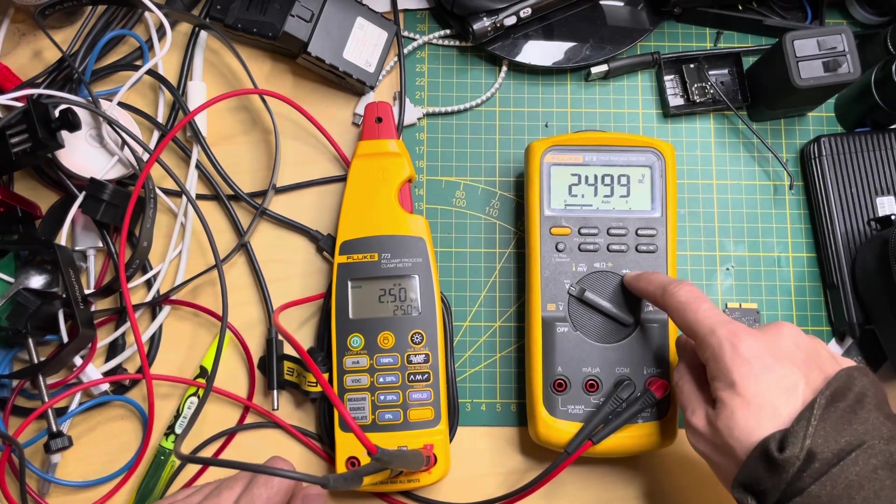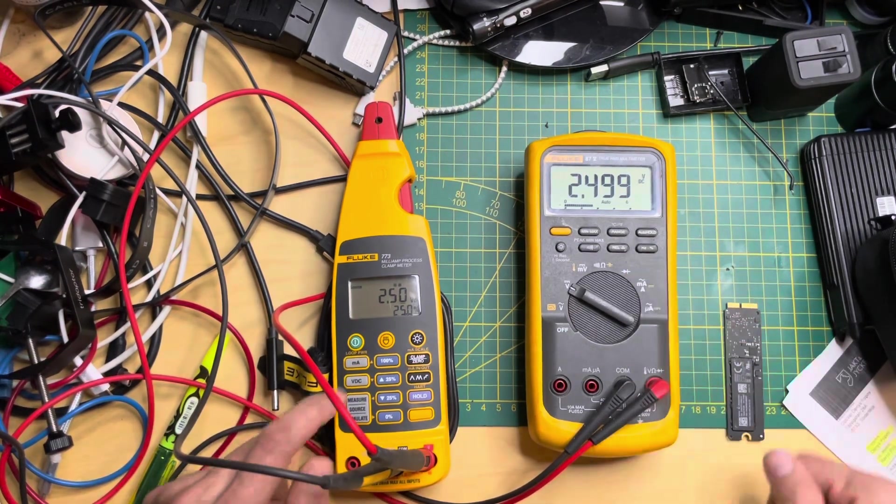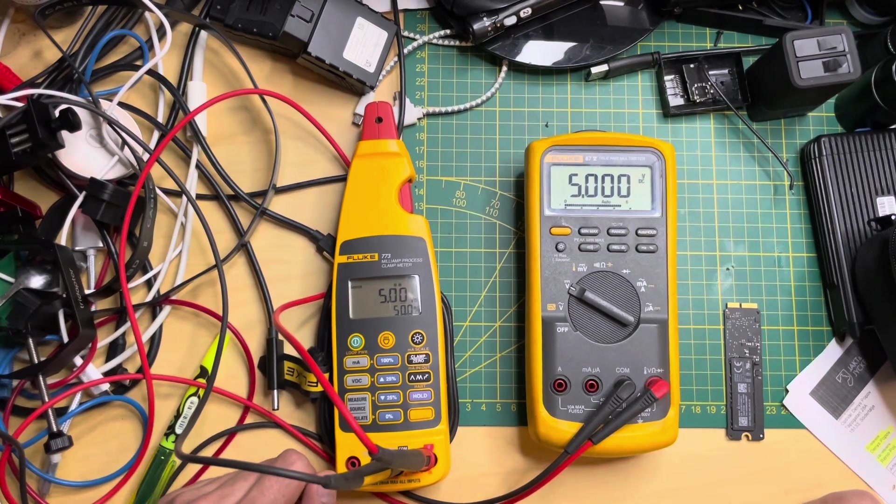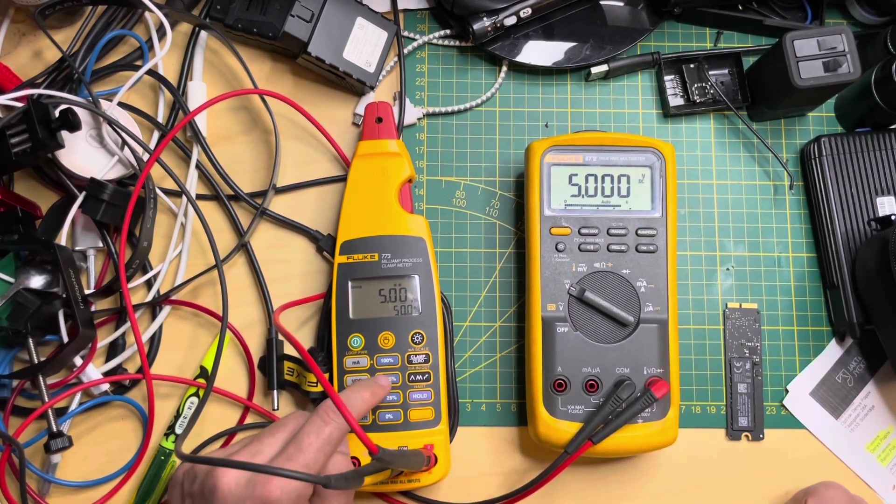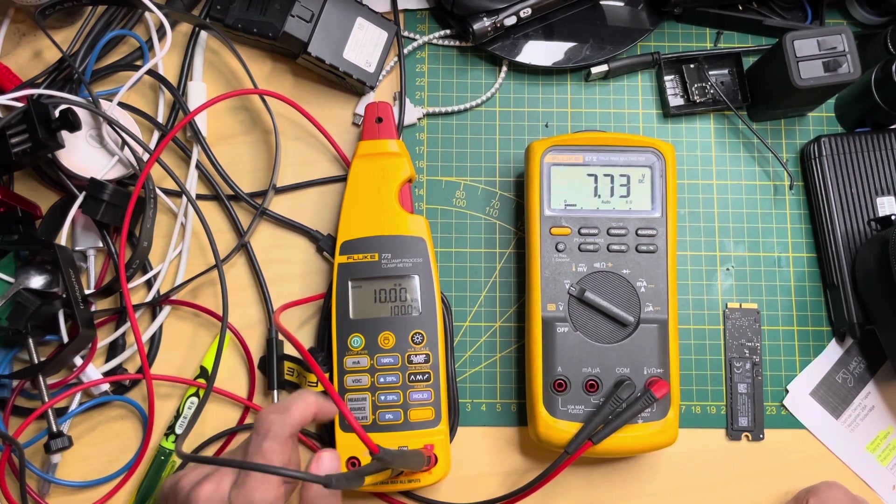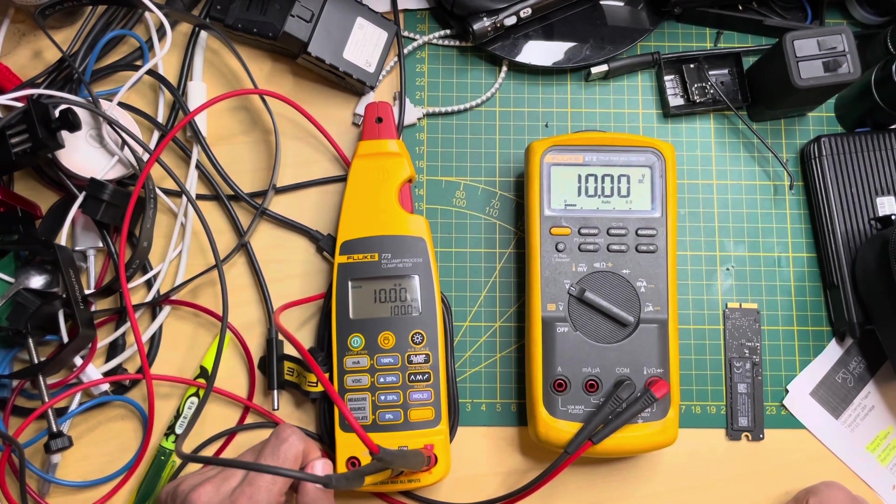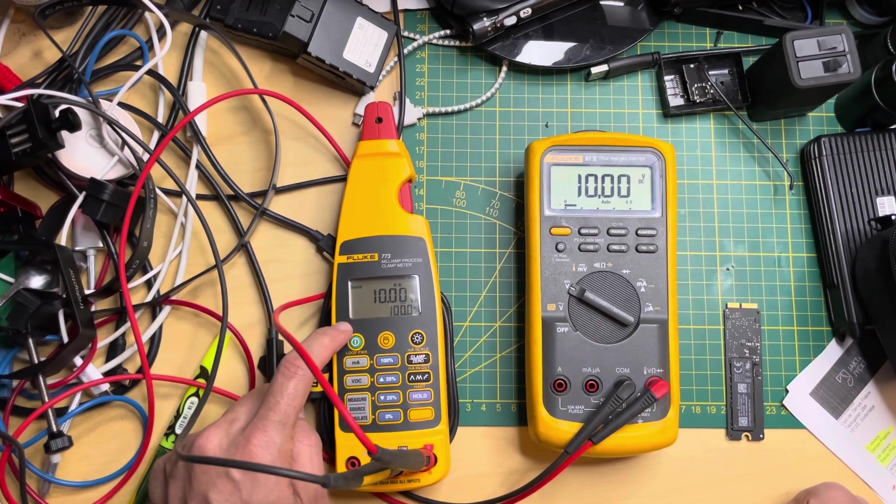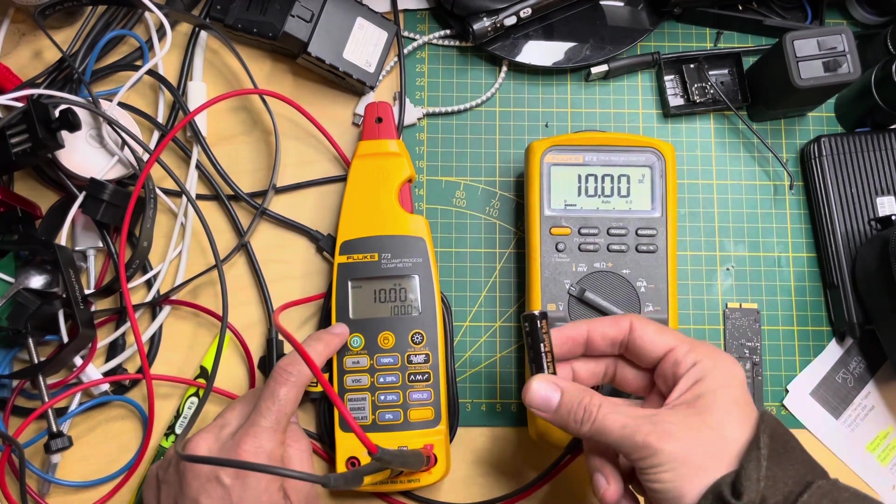On my Fluke 87 I'm reading 2.499 volts. Going one step up, that's 5 volts—you see it measures quite accurately. Then 7.5 and 10 volts. This one operates on four double A batteries.